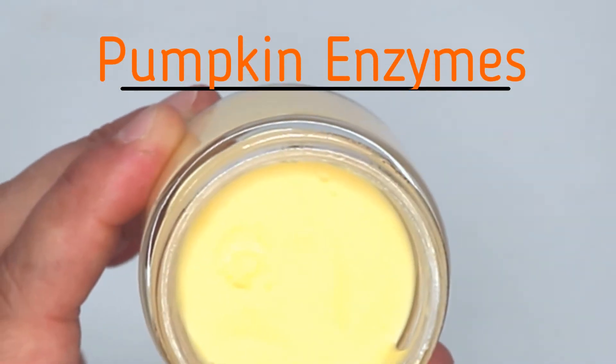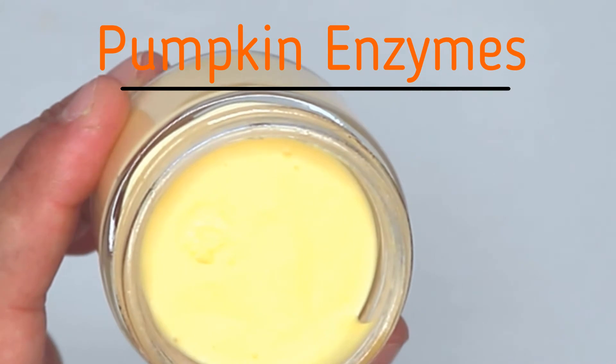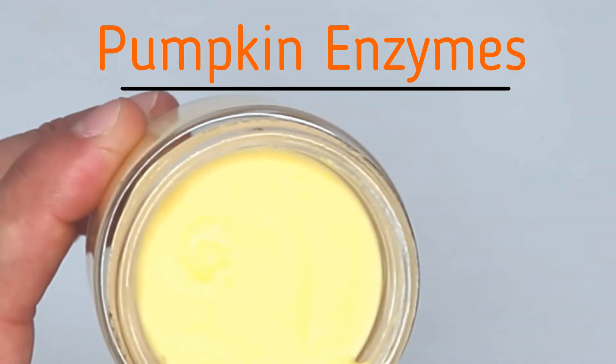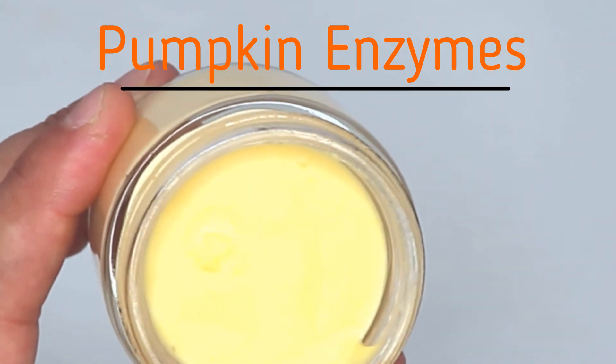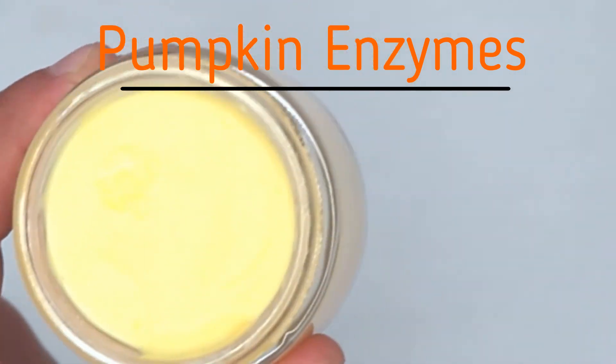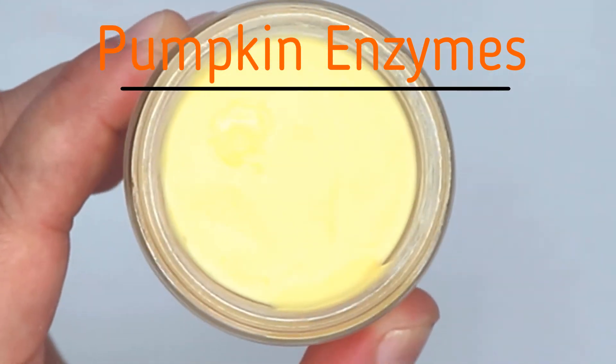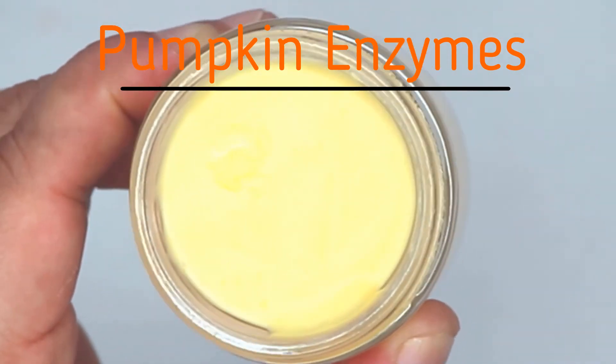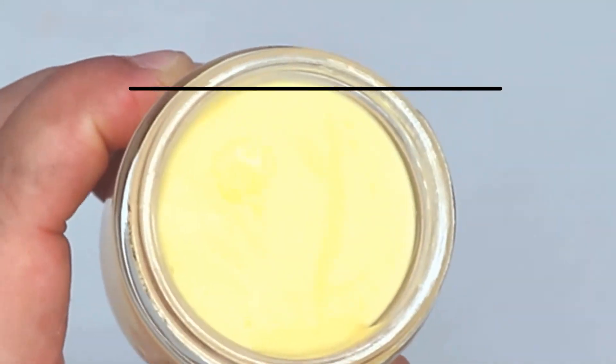Our secondary exfoliant is pumpkin enzymes. Gentle exfoliation that helps smooth fine lines and soften the skin. It is said that pumpkin enzymes is the most gentle of the enzymes out there in cosmetics.